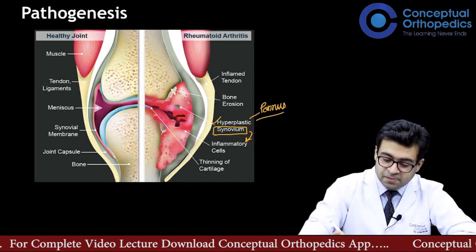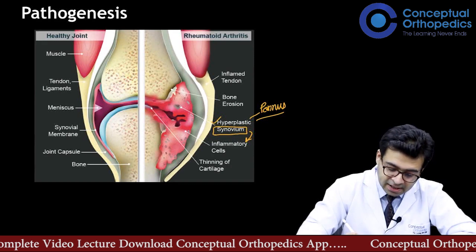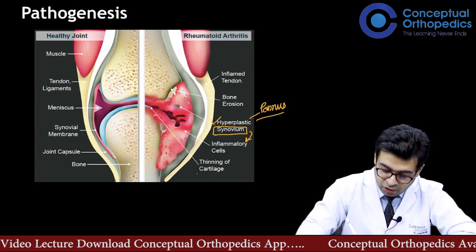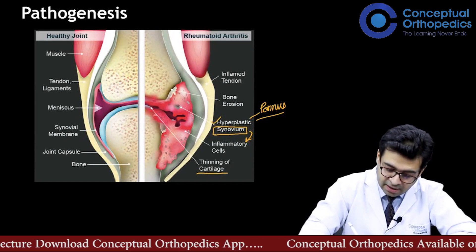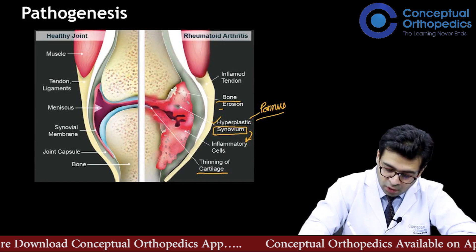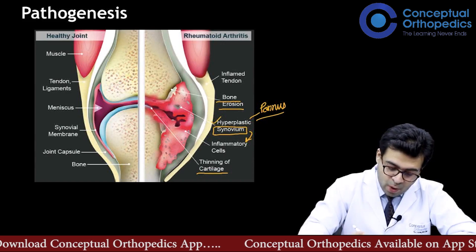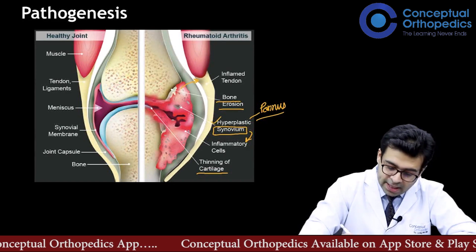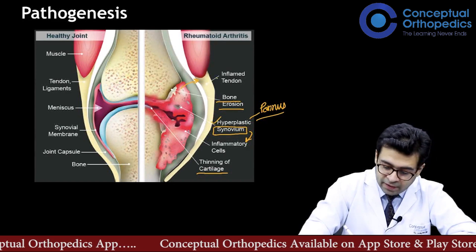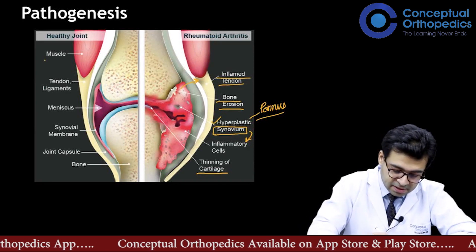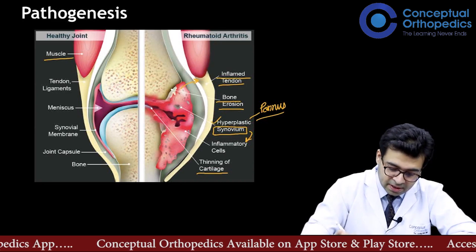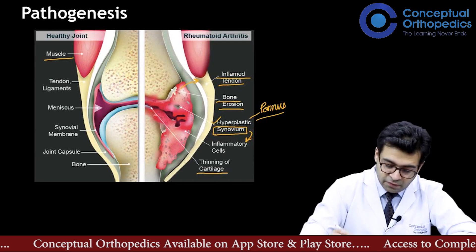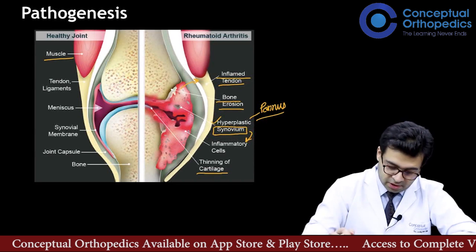The pannus erodes and eats away the cartilage and the bone, causing thinning of the cartilage and bony erosions. When this inflammation goes out of the joint, it also affects the nearby tendons and muscles, leading to inflammation of all these structures.